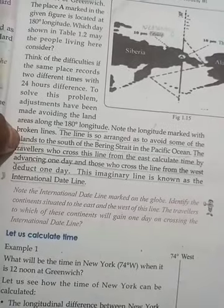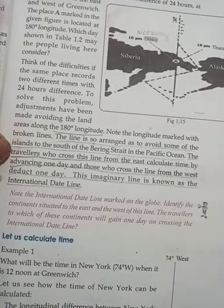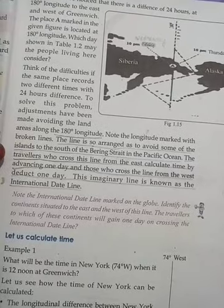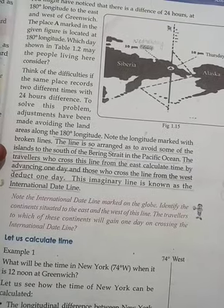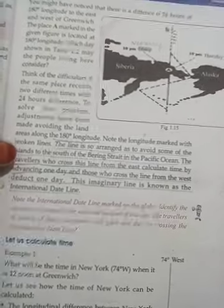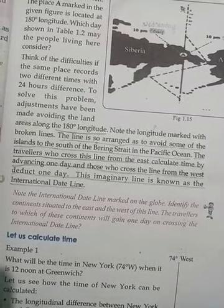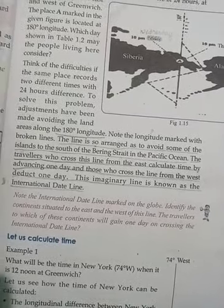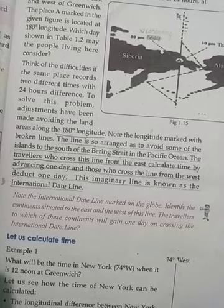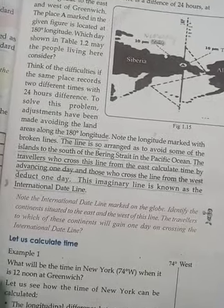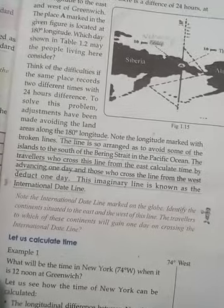The line is so arranged as to avoid some of the islands to the south of the Bering Strait in the Pacific Ocean. The line is so arranged as to avoid it.